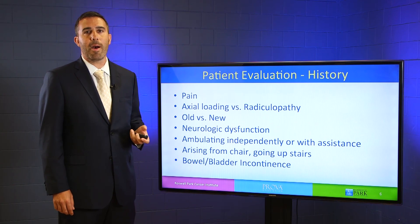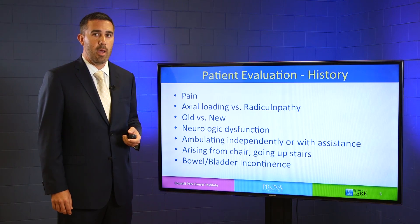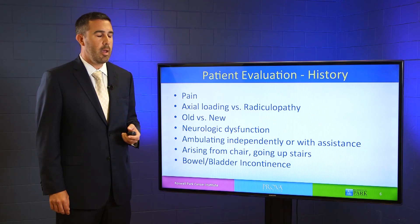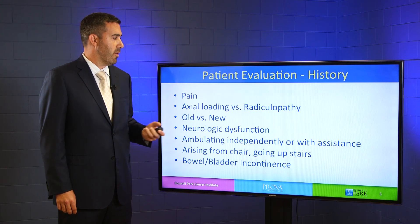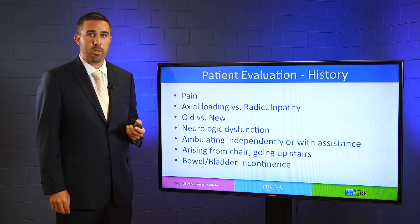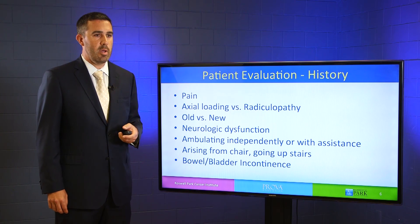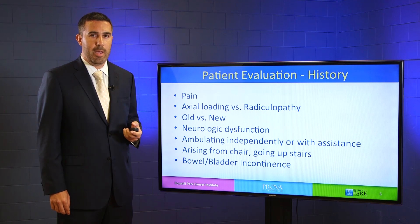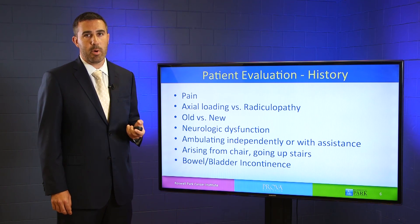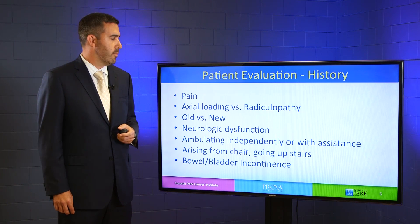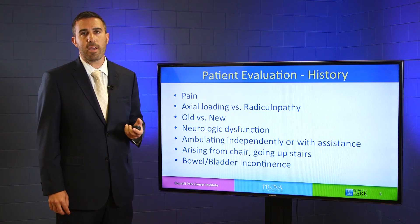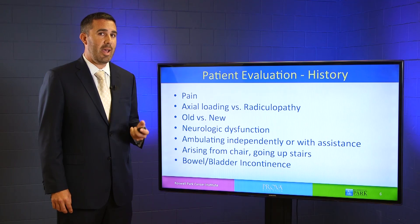Paramount to the evaluation of a patient with any form of neck or back pain — with or without a history of cancer — is a good history. The history starts with the descriptive factors of that pain. Is it stabbing? Is it burning? Is it throbbing? Does it radiate? Does it come and go? Also the location: is the pain just in the neck, just in the back? Does it radiate down an arm or down a leg? Or does it wrap around the ribcage, which can happen when a thoracic nerve root is irritated?